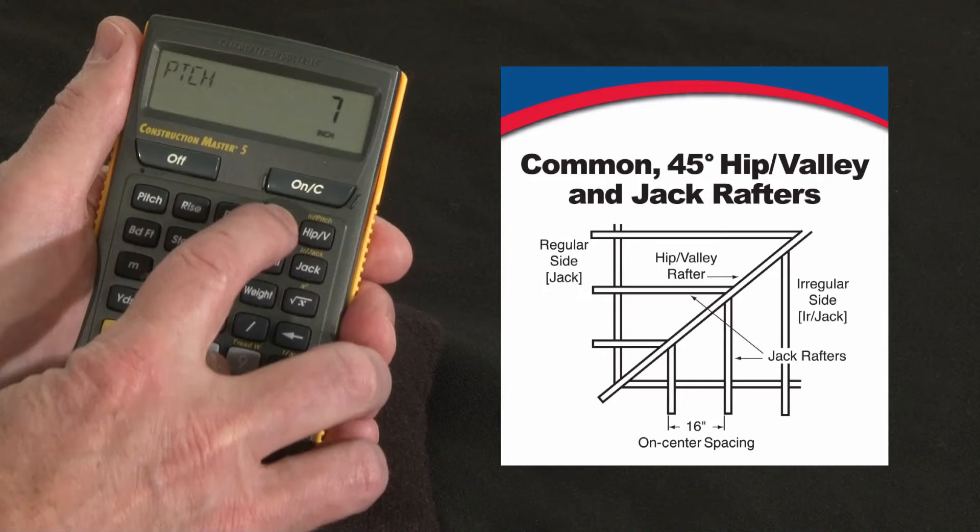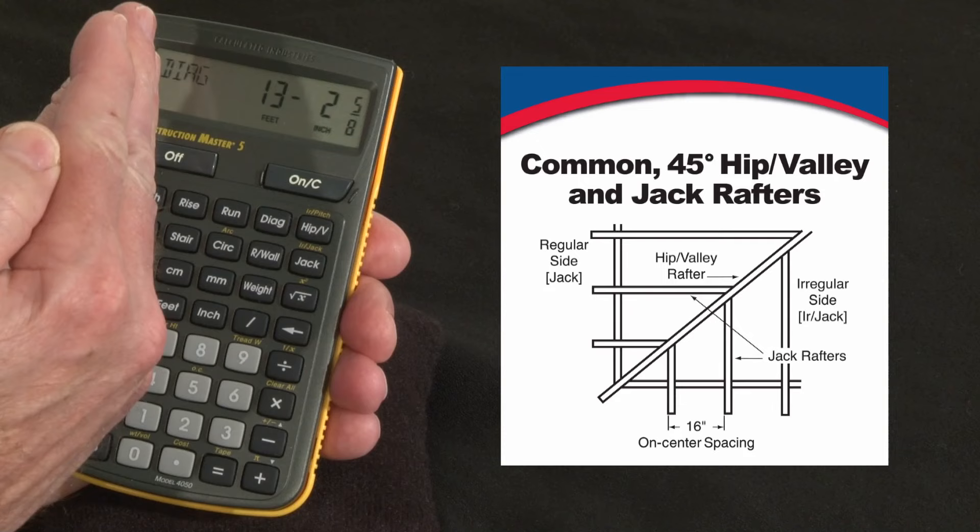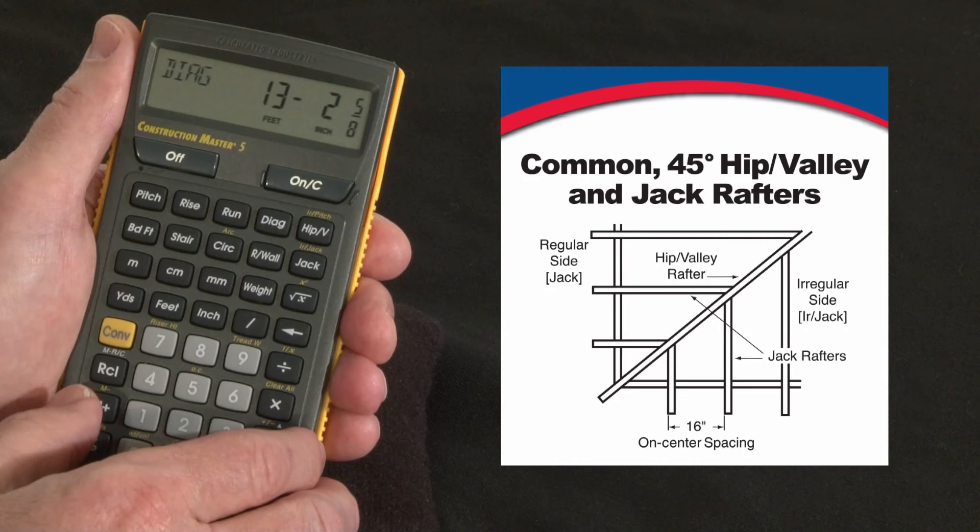I just press the diagonal key to get the common rafter length — it's 13 feet 2 and 5/8 inches. That's point to point; you would still need to adjust for half the thickness of the ridge and add any overhang that you wanted to have, but that is the geometrically correct answer.